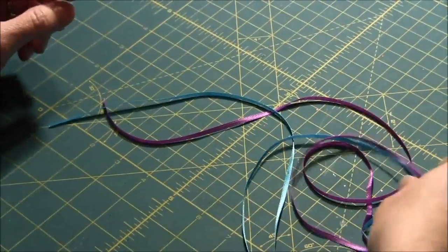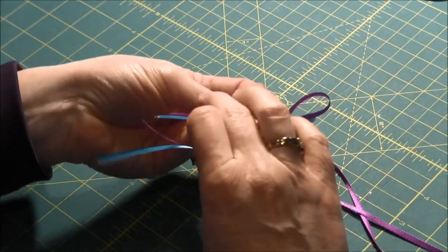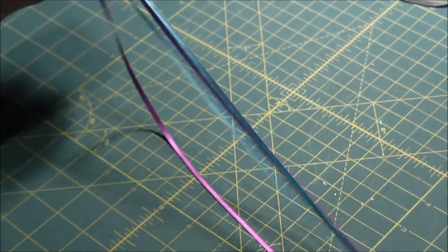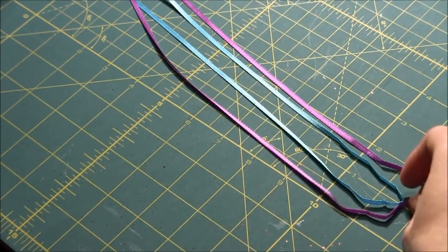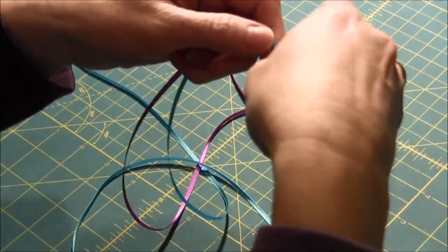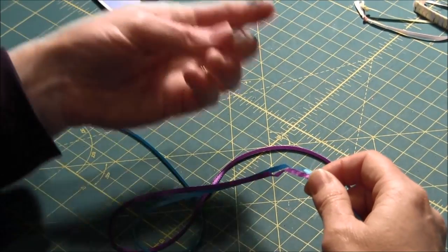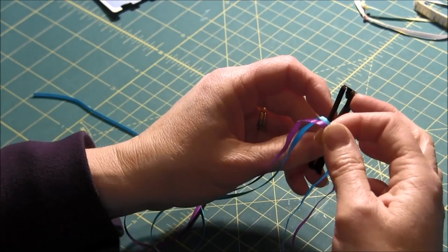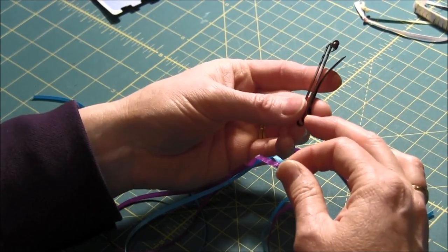To start this project, take your two ribbons together and fold them in half so you can get where the center is of the ribbon. Then you're going to start on the end that is not where the hook is. You don't want to start on this end.